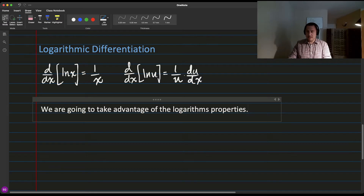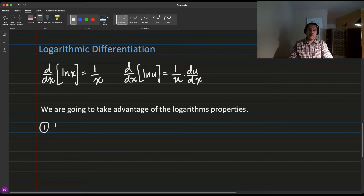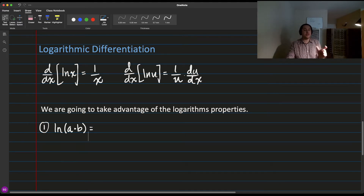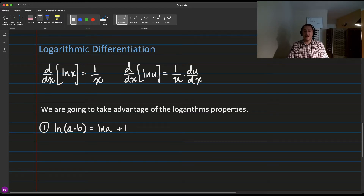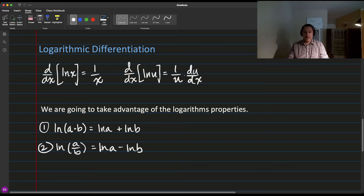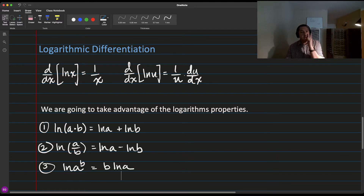So what properties are we talking about? Hopefully you remember these. If you have the natural logarithm of a times b — the natural logarithm of a product — that splits into a sum of logarithms. And if you're dividing, you subtract. And the last one is if you have the natural logarithm of a power, the power can end up in front of the natural logarithm. So we're going to take the logarithm of things and use these rules to split them up.